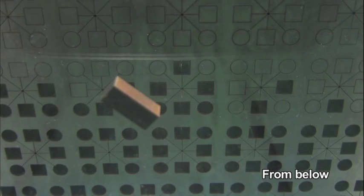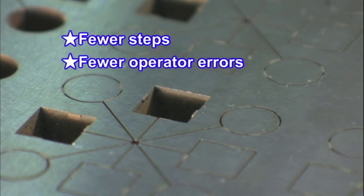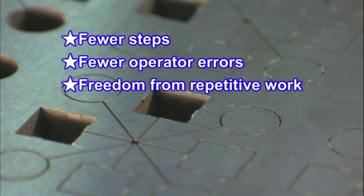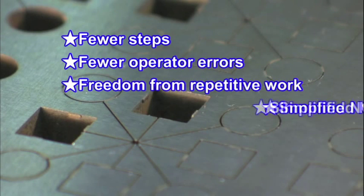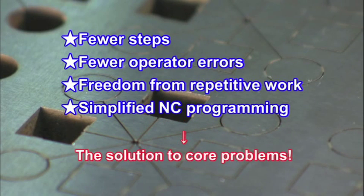The core stitch function reduces the number of machining steps, slashes manual error, and frees workers from repetitive work, as well as simplifying NC programming. It takes care of numerous problems related to cores at once.